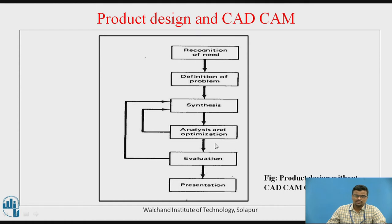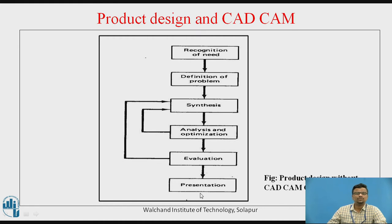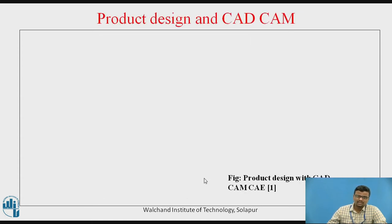After creation of the synthesis and analysis, we are validating and optimizing the engineering analysis. Whenever the validation is correct, it goes to the presentation stage. The presentation is done using drafting sheets which consist of different types of views: front view, top view, side view, sectional view, and isometric view — all done as manual work.